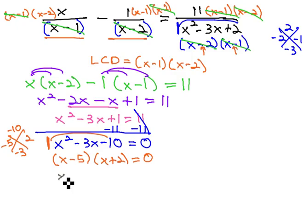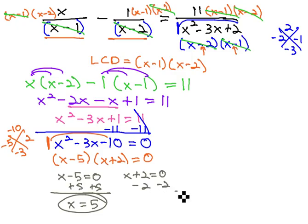Once it's factored and equal to 0, we set each factor equal to 0. x minus 5 equals 0, and x plus 2 equals 0. Adding 5 to both sides, we get our first possible answer, which is 5. Subtracting 2 from both sides gives us our second possible answer, negative 2.